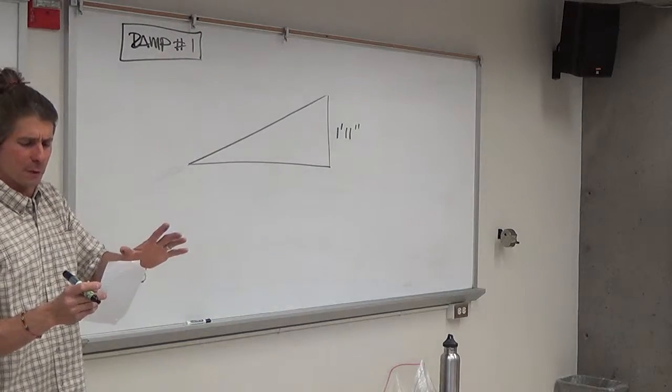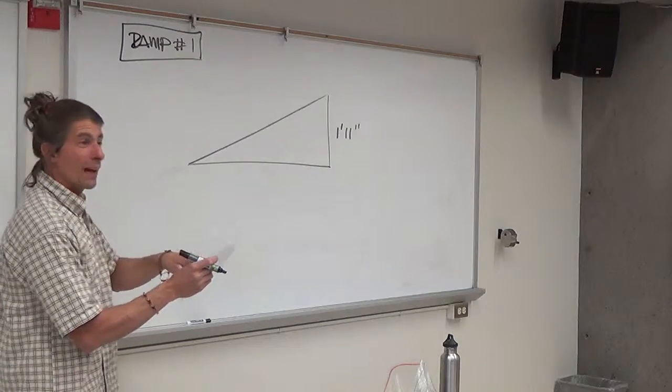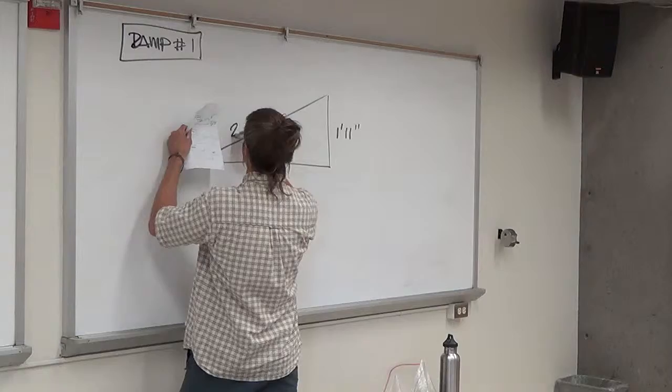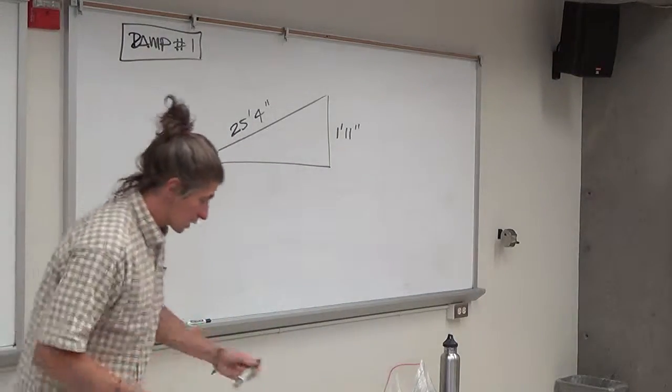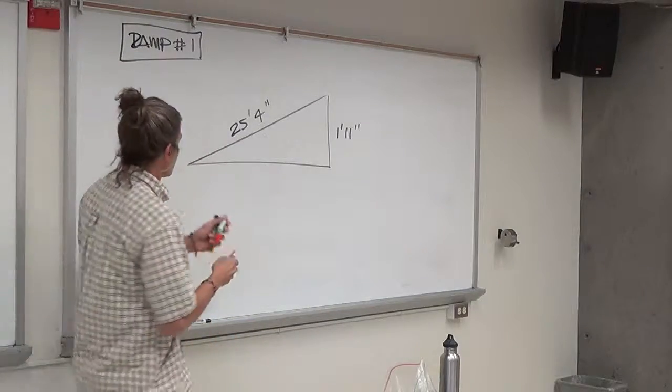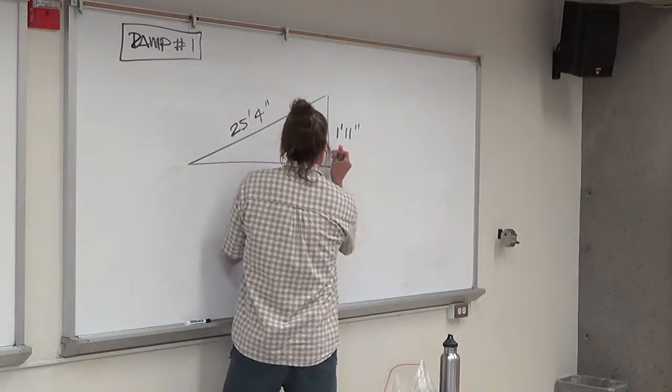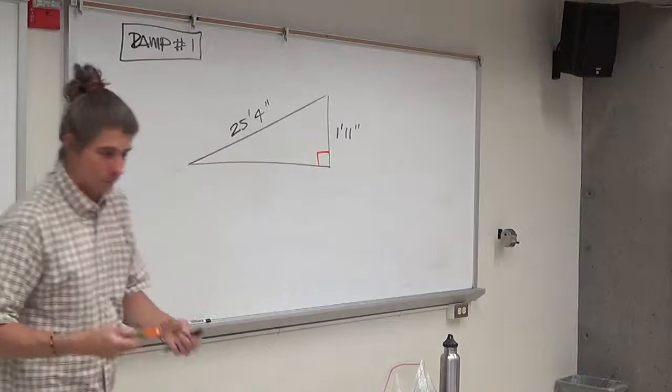I think I did that right, seven three minus five four, yeah, one eleven. The hypotenuse here is 25 feet four inches. And you can assume, because God knows I did, you can assume that's a right angle, okay?